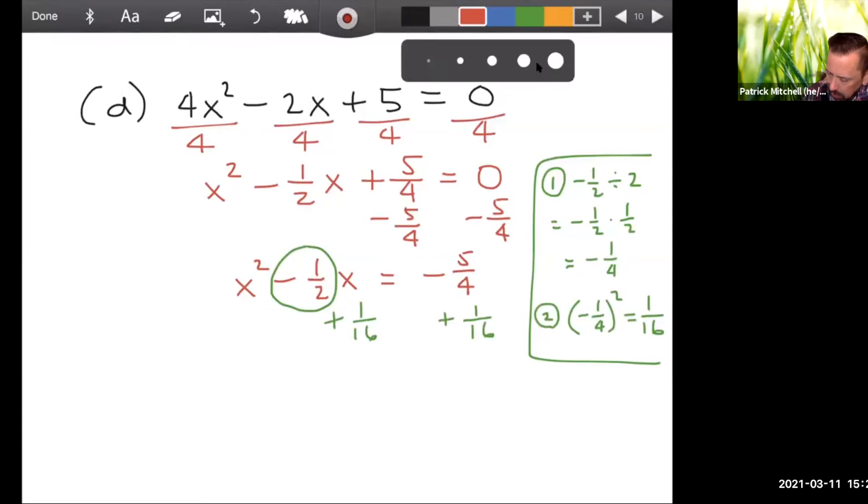So let's add 1 sixteenth to both sides. That's going to give us x squared minus 1 half x plus 1 sixteenth. Alright. Now we have to add negative 5 fourths plus 1 sixteenth. The common denominator is 16. We have to multiply this by 4 over 4. So that's going to give us negative 20 over 16 plus 1 over 16. That comes out to negative 19 over 16.